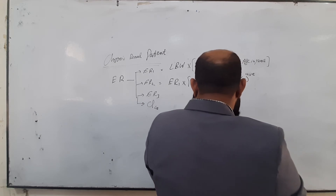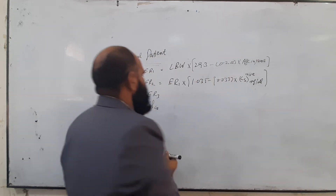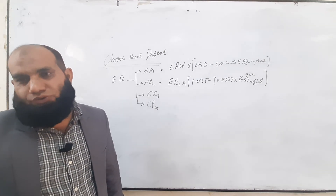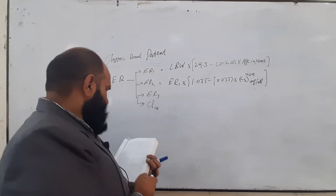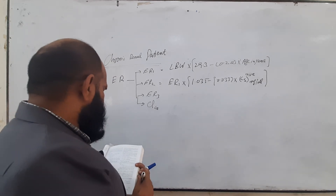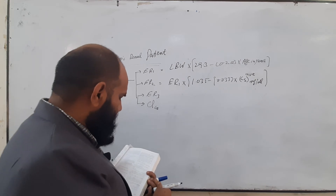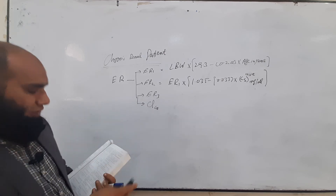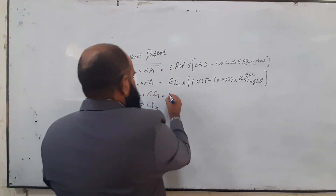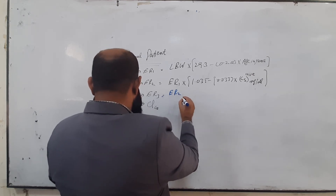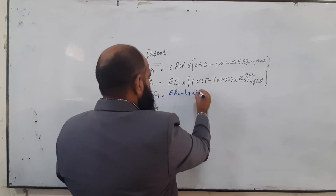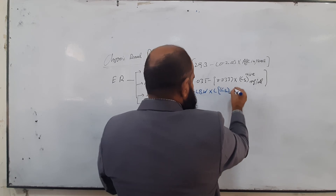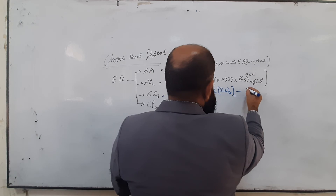ER2 is calculated as: ER1 × (1.035 − 0.0337 × average systemic creatinine concentration in mg/dL). The average systemic creatinine concentration is obtained by averaging measurements from two or three time points. ER1 is thus used as an input to calculate ER2.